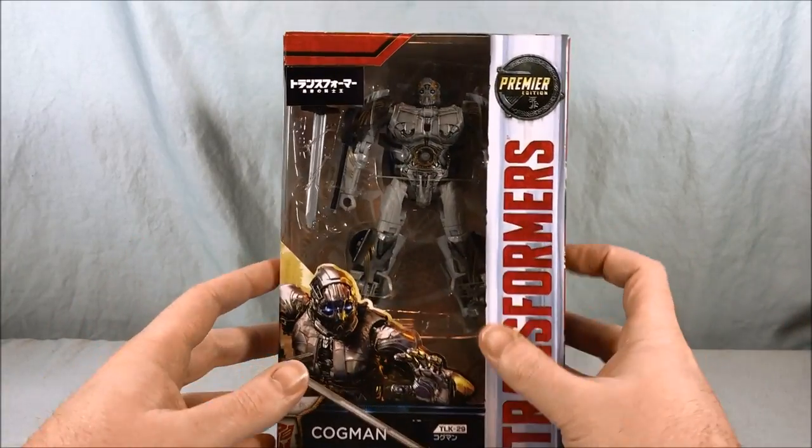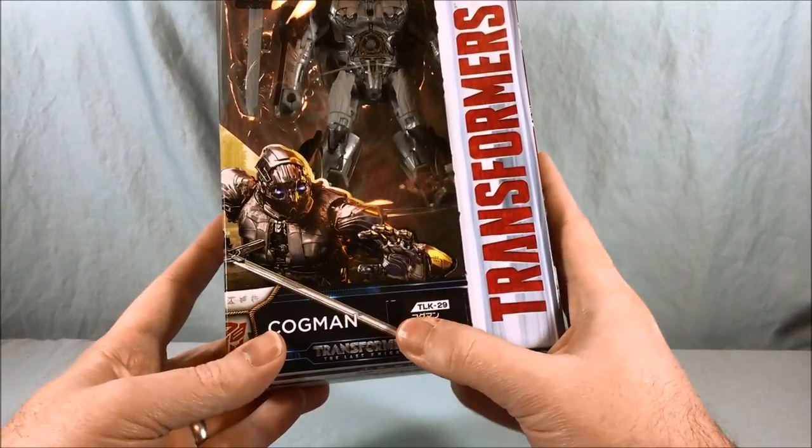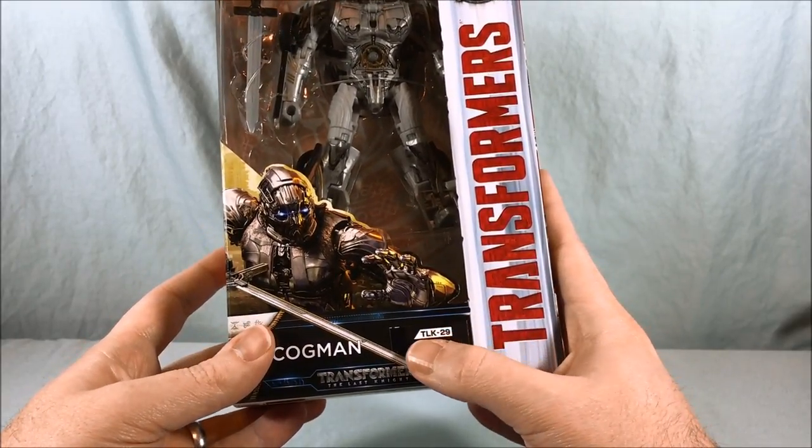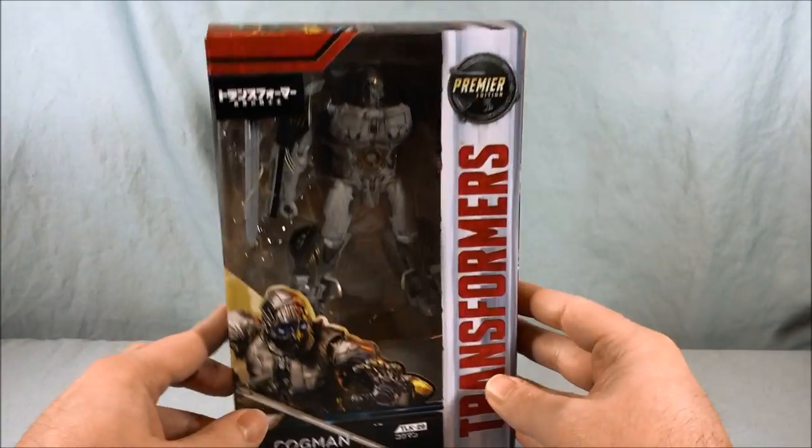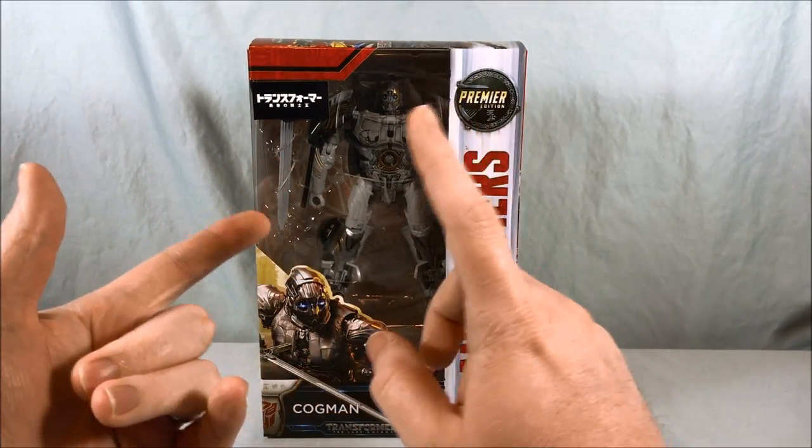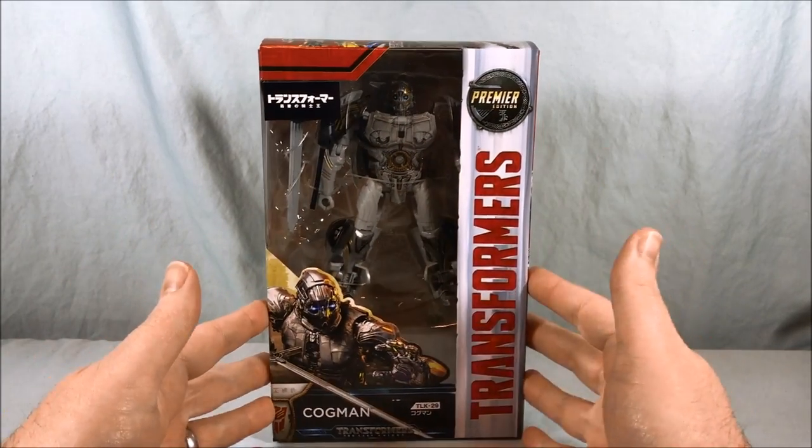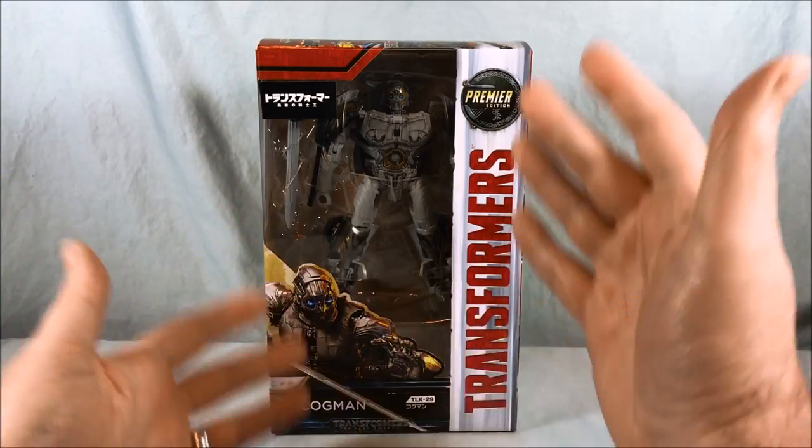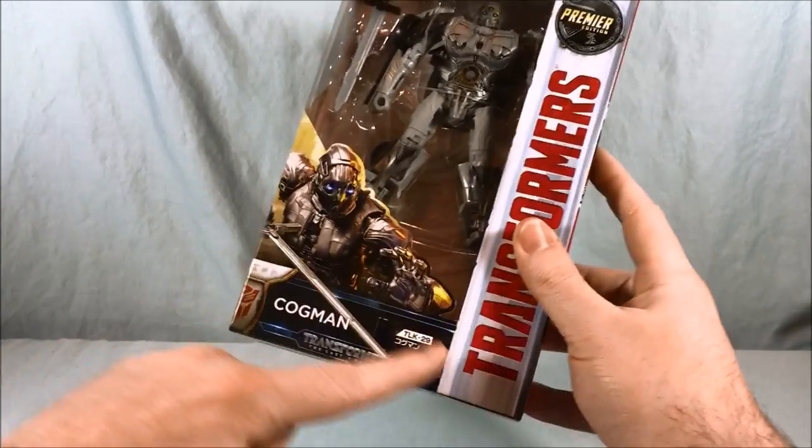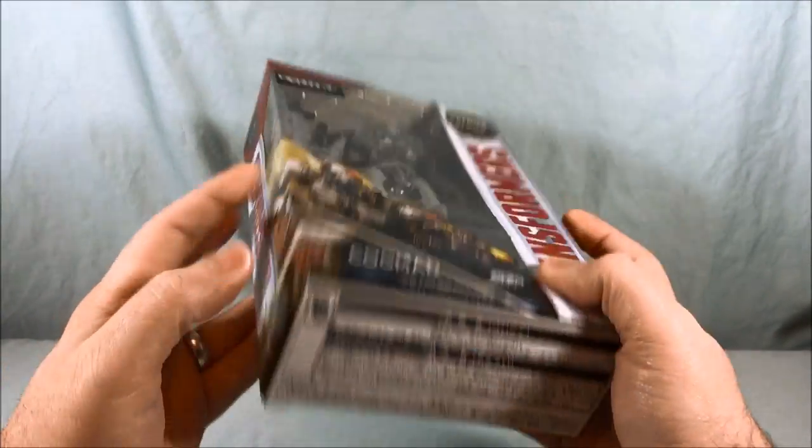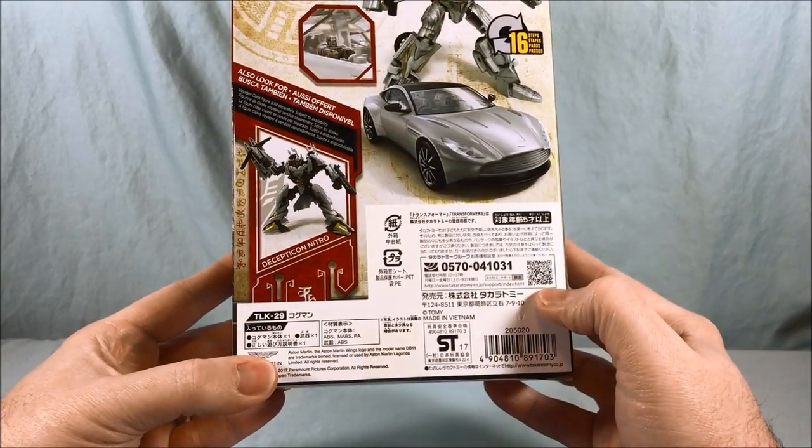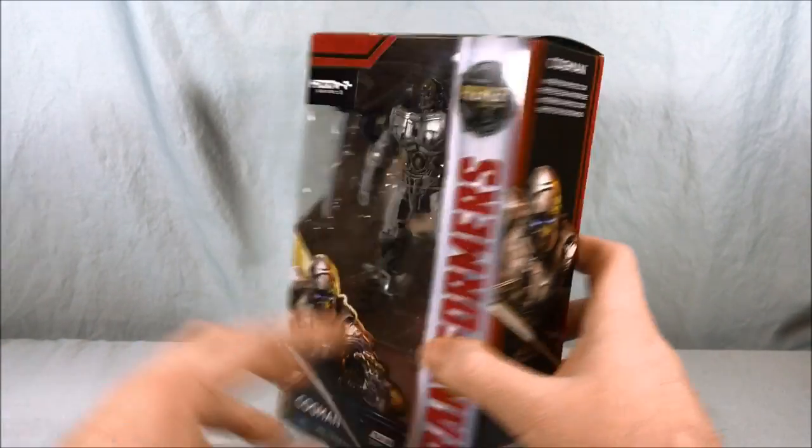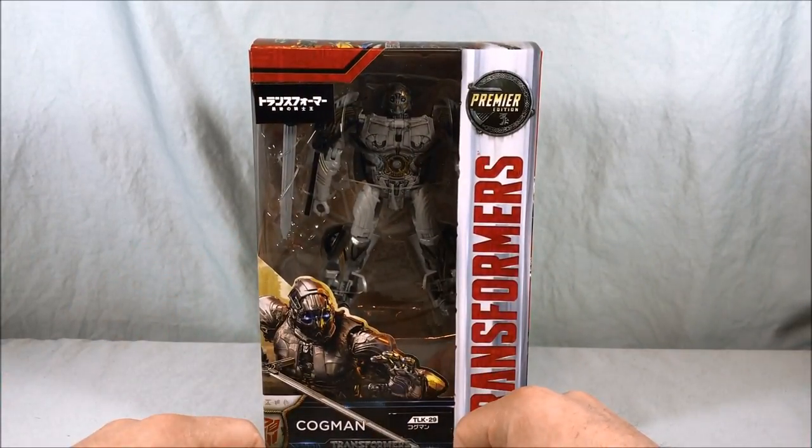Now technically this is the Japanese version as you can tell by the sticker that says Transformers and TLK-29 for The Last Knight with his name Cogman. In the Japanese line they numbered all the figures - Deluxe Class, Voyager Class, Leader Class, those Turbo One-Step Changers. They were all numbered but basically this is the American version with some Japanese stickers. The packaging is pretty much the American version with stickers added.